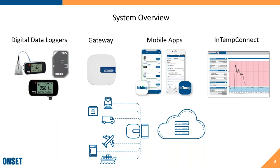Once the gateway or mobile app receives data from the logger via Bluetooth, it sends data to the Intemp Connect cloud platform. The gateway sends data via Wi-Fi or Ethernet; mobile apps can send via Wi-Fi or cellular. You can use both the gateway and apps together. As long as they're all signed into the correct Intemp Connect account, all data goes to the same centralized cloud account, regardless of location or device.